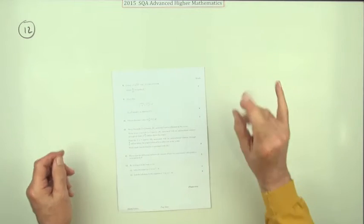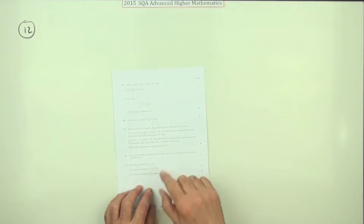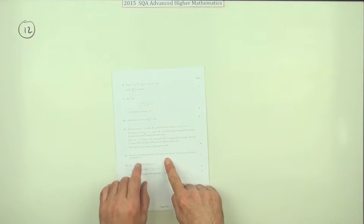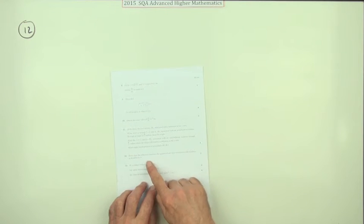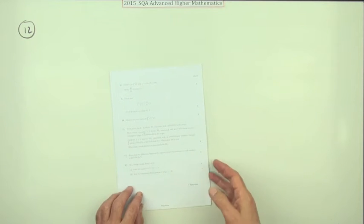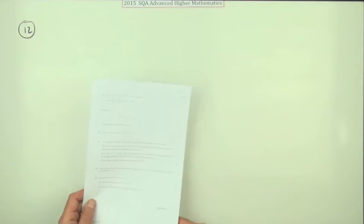Number 12 from the 2015 Advanced Higher Maths. Another proof here. This time it's a direct proof for three marks. Prove that the difference between the squares of any two consecutive odd numbers is divisible by eight.